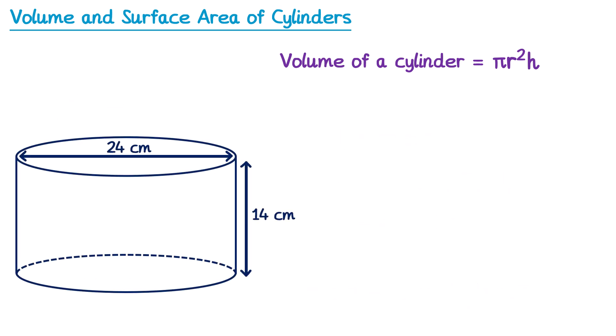Let's try a second cylinder. The volume is equal to π, then we multiply by the radius squared. But in this question we haven't been given the radius — we've been given the diameter at 24. The radius is half of the diameter, so if we halve 24 we find the radius is 12. So you need to be careful and make sure you're using the right numbers in the formula. So we would multiply by 12 squared, not 24 squared, and the height is 14, so multiply by 14.